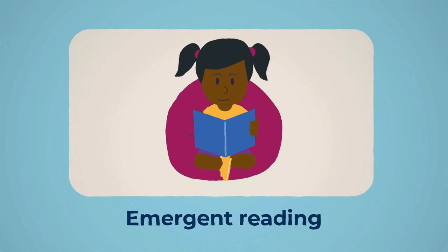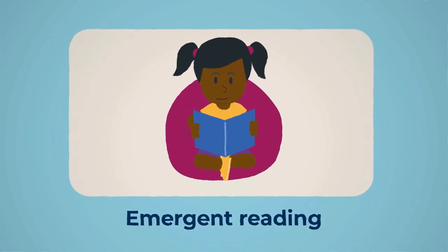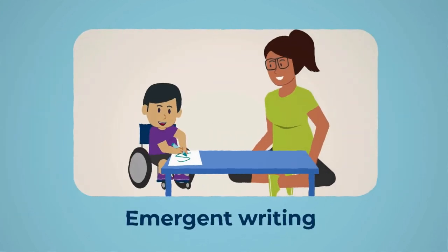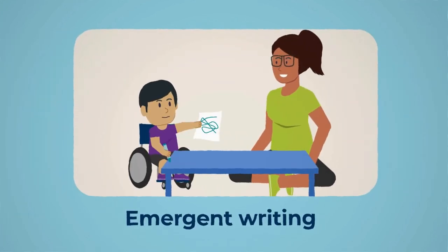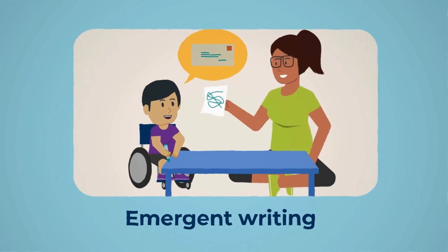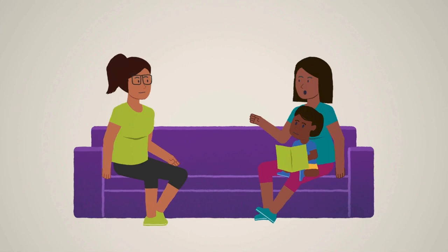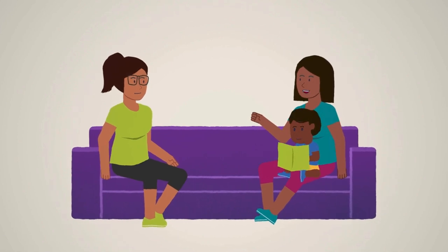Emergent reading describes the early stages of understanding written text. It includes decoding letters and symbols and becoming familiar with written materials. Emergent writing is expression by making marks and using these to convey meaning, eventually learning letters and using them to form words. Many children first develop these skills in a language other than English.